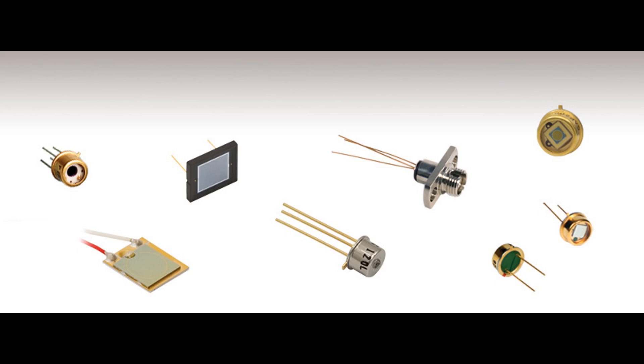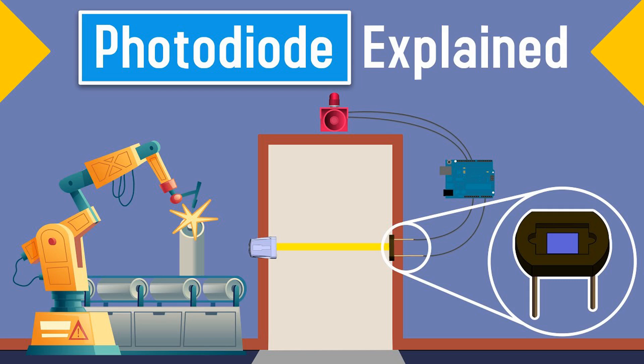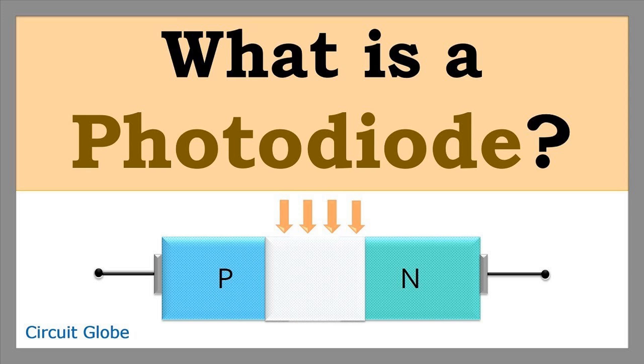Safety and security: Photodiodes in smoke detectors measure changes in light intensity caused by smoke particles, triggering an alarm. Flame detectors sense specific wavelengths of light emitted by fire, used in industrial safety systems. Infrared sensors with photodiodes detect motion in burglar alarms by sensing changes in infrared light patterns.